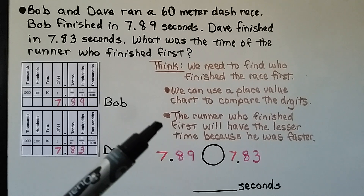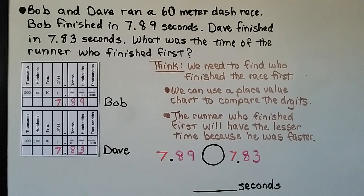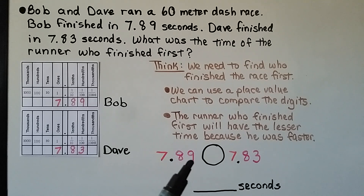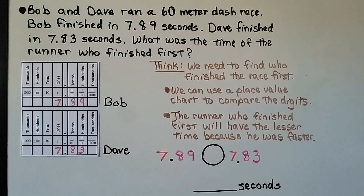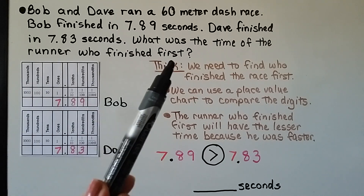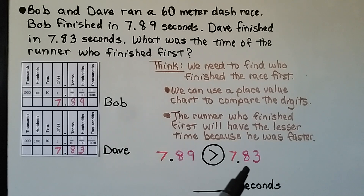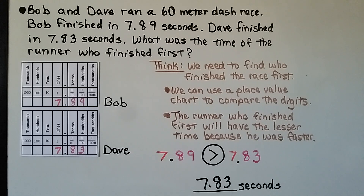The runner who finished first will have the lesser time because he was faster. We can see nine hundredths is greater than three hundredths, so seven and eighty-nine hundredths is greater. But be careful — the runner who finished first will have the lesser time. So the time of the runner who finished first was Dave at seven and eighty-three hundredths seconds. It's very important that we answer what is actually being asked to give the correct answer.